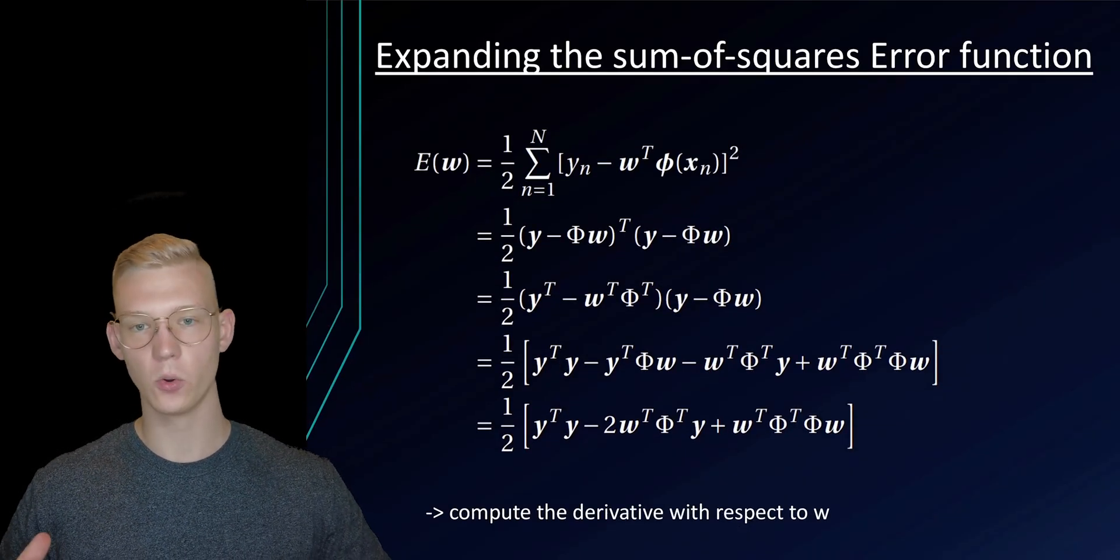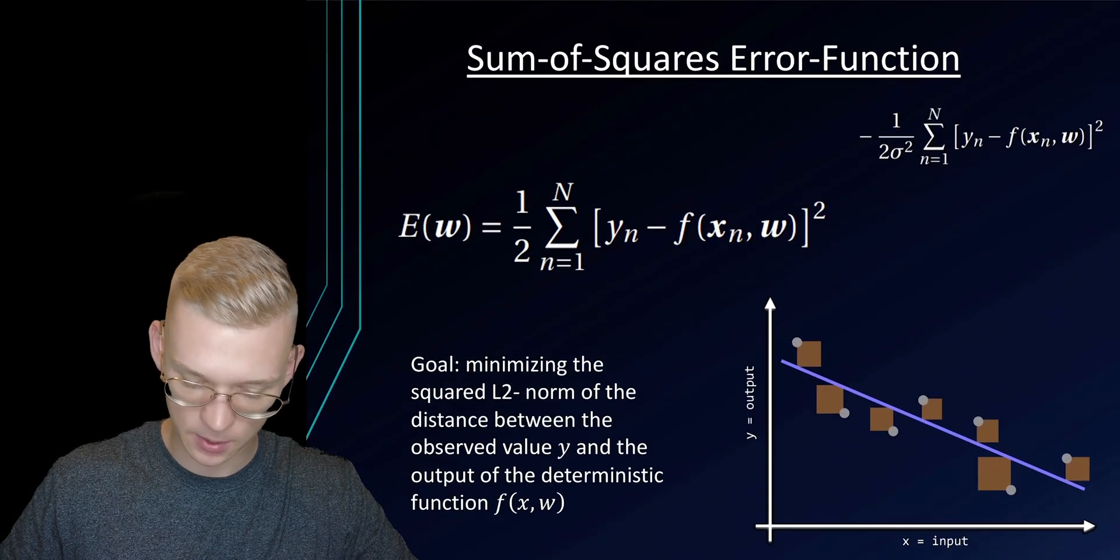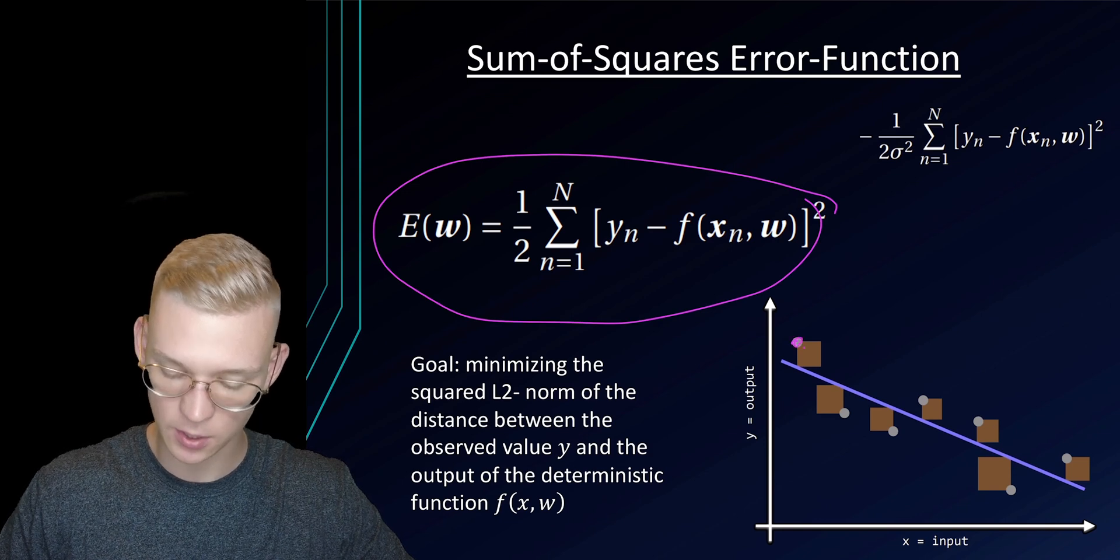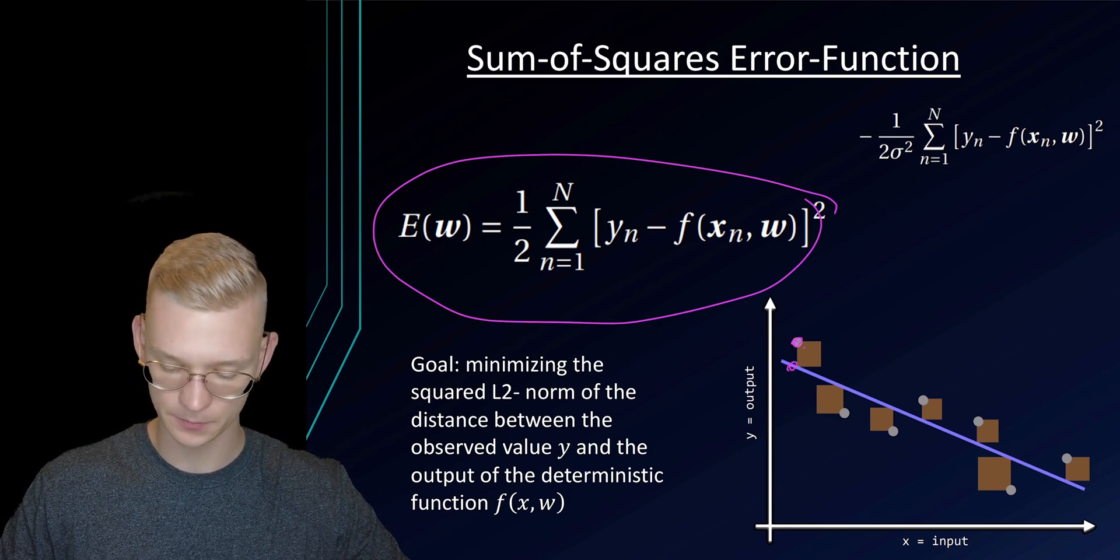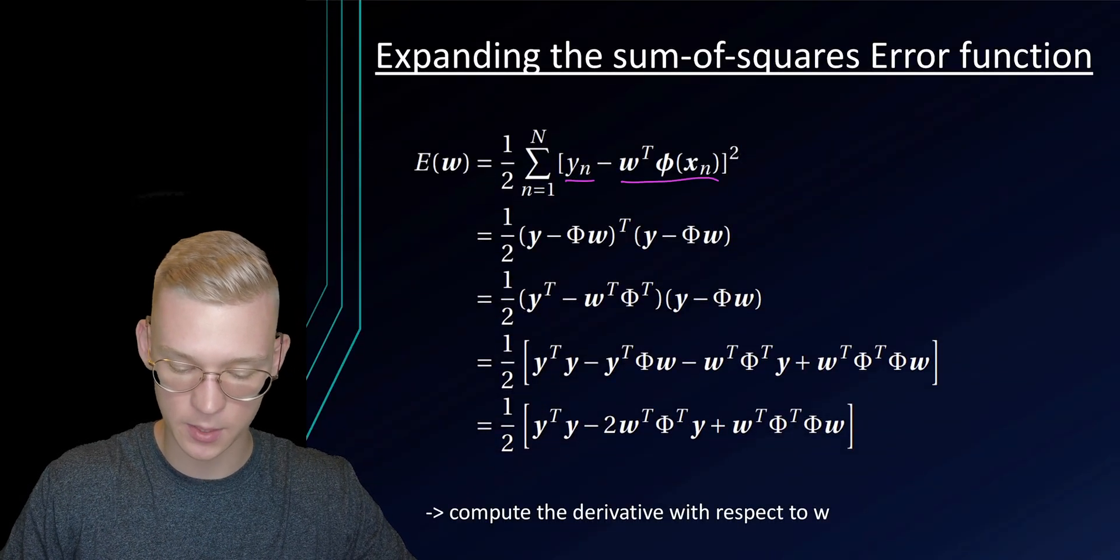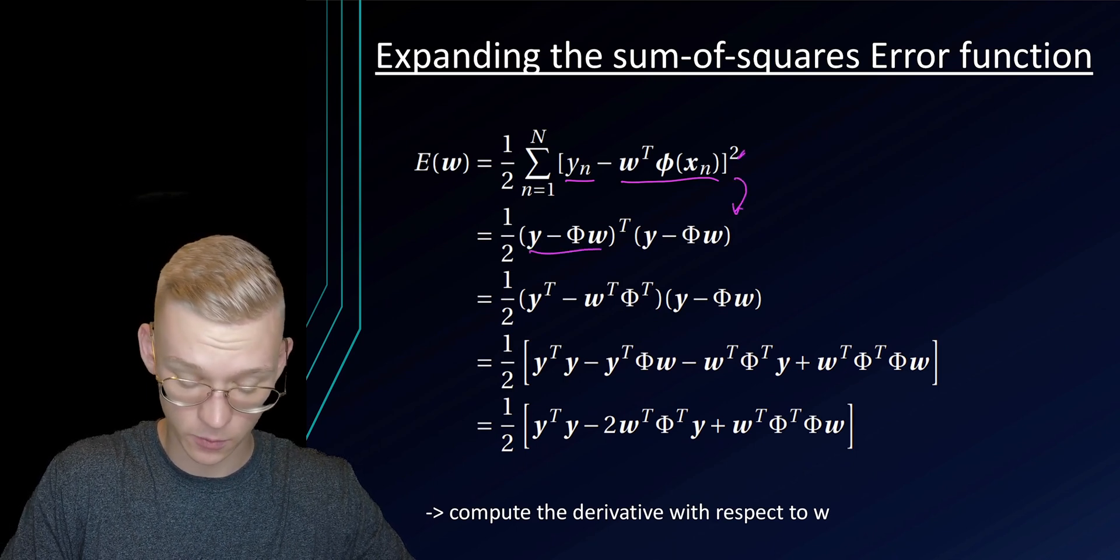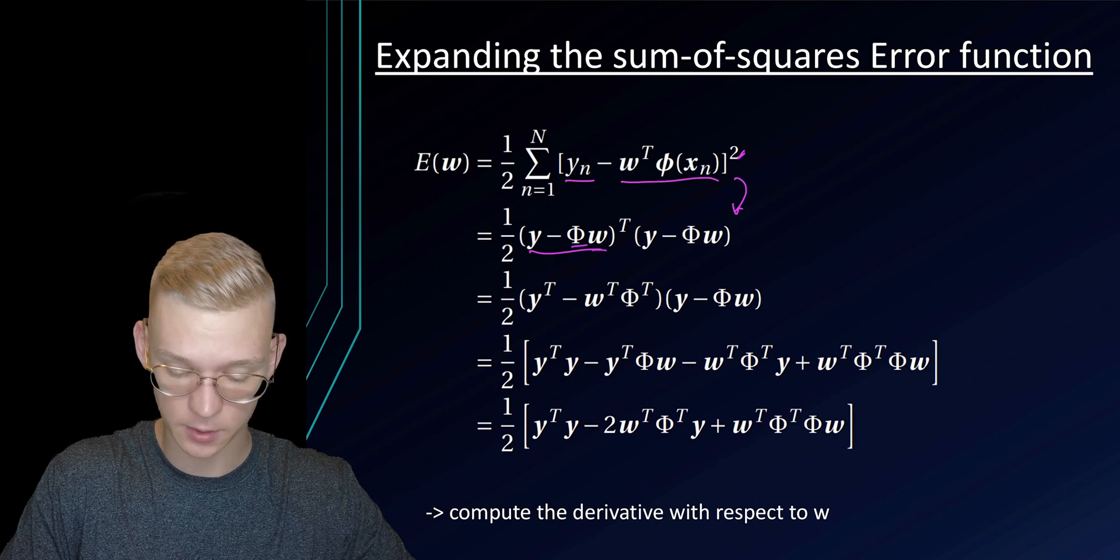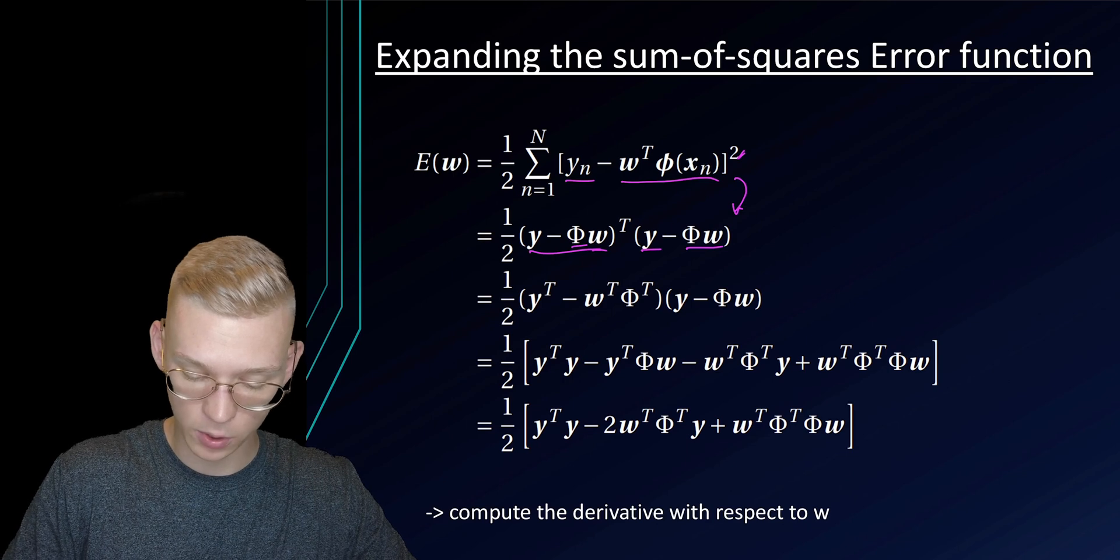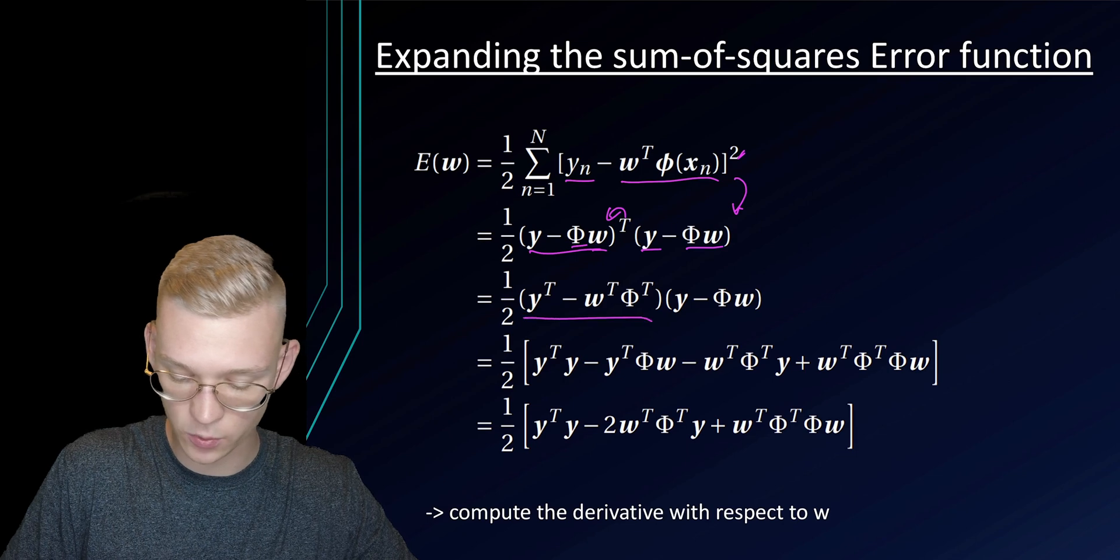Now we want to get rid of the noise term and only focus on these parameters that we are actually trying to find. So in the last videos we talked about the error function. This is our error function. That is a square difference between the observed value and the predicted value. We factor it out because we have a square. So it's y minus phi times w and y minus phi times w. Then we multiply that out.